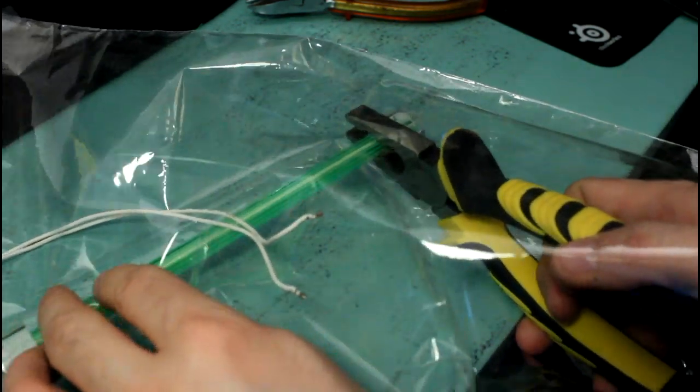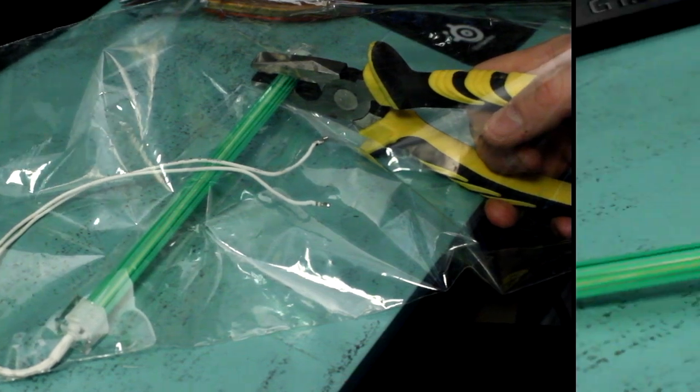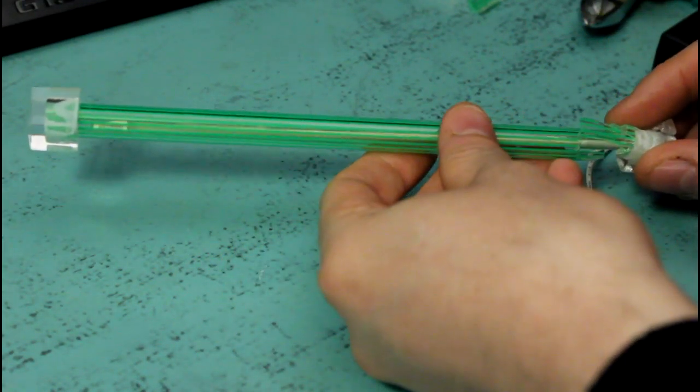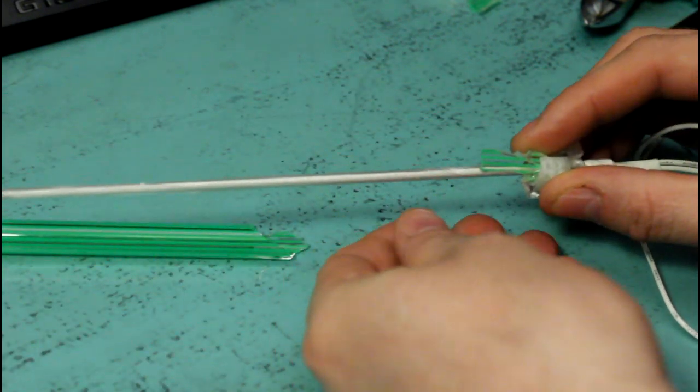But try to break it off slightly and you should be able to pull out the tube. And fast forward to me having broken off the CCFL at the right end. At the correct end, so now I can just pull it out of the tube like that.